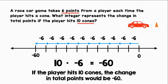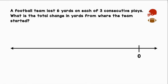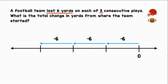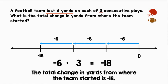If the player hits ten cones, the change in total points would be negative 60. A football team lost six yards on each of three consecutive plays. What is the total change in yards from where the team started? Let's represent this situation using a horizontal number line. The team lost six yards, which we can show with a negative six, three times. We can represent this with negative six times three, which gives us negative 18. The total change in yards from where the team started is negative 18.